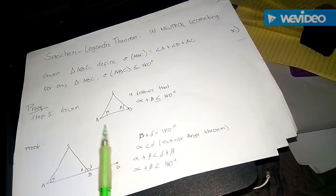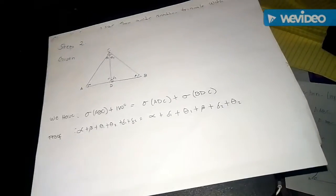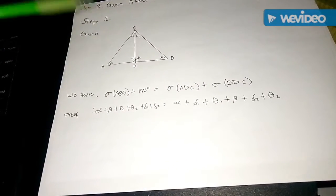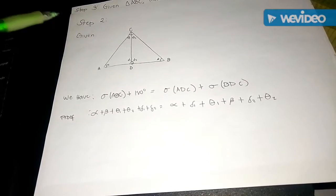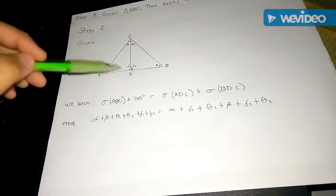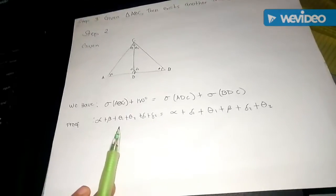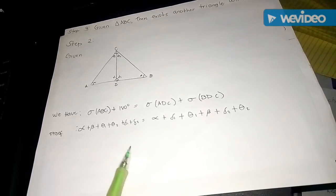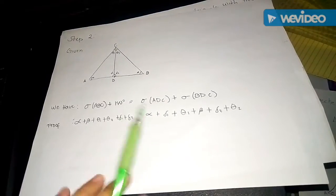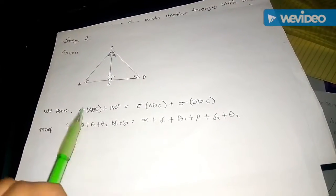In the next part of this proof we show that, given any triangle ABC, we want to relate the angle sum of two triangles that constitute this triangle. If we create another point D on side AB, that will split triangle ABC into two smaller triangles: ADC and BDC. The step says that the angle sum of triangle ABC plus 180 degrees equals the angle sum of ADC plus the angle sum of BDC.